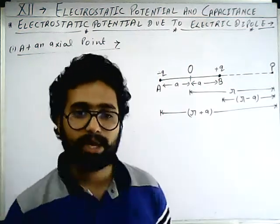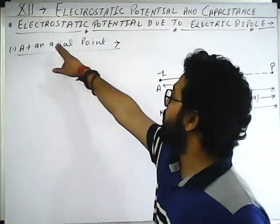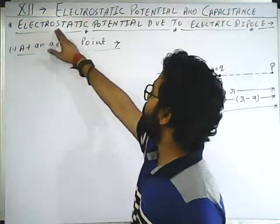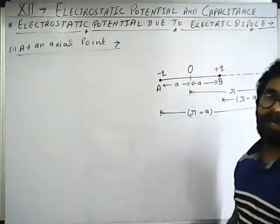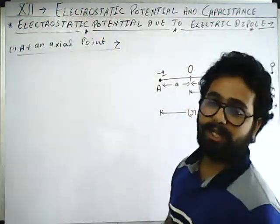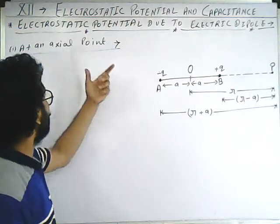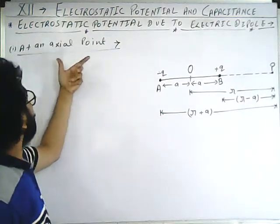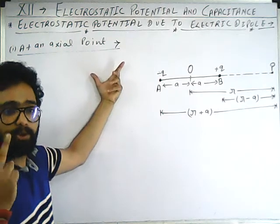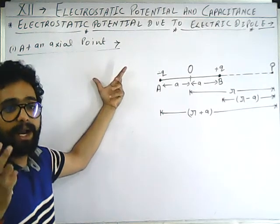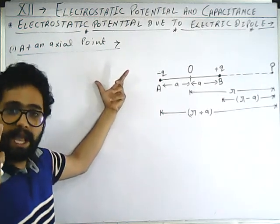Hello students, welcome. Today we will read about electrostatic potential due to electric dipole. There are three cases for it: one is at an axial point, second one is at an equatorial point, and third one is at any point.